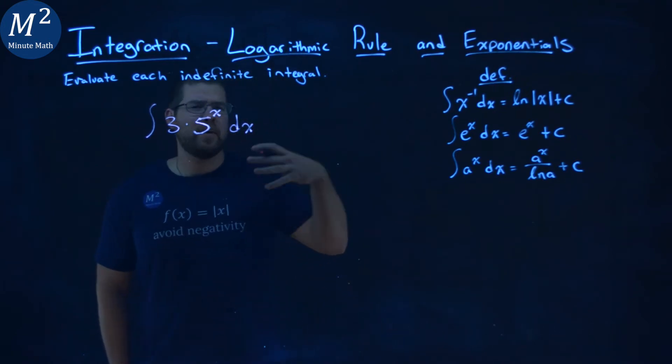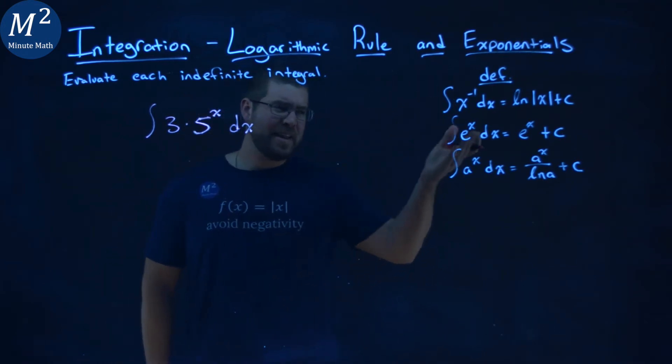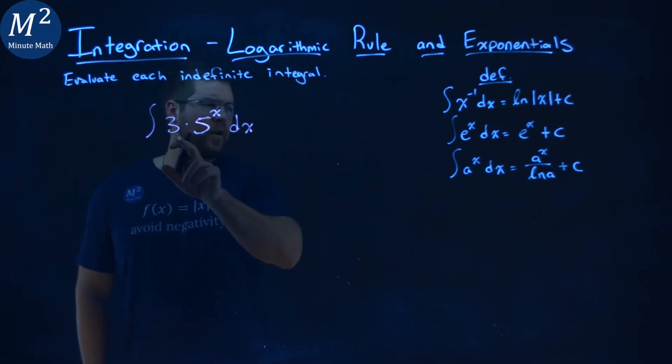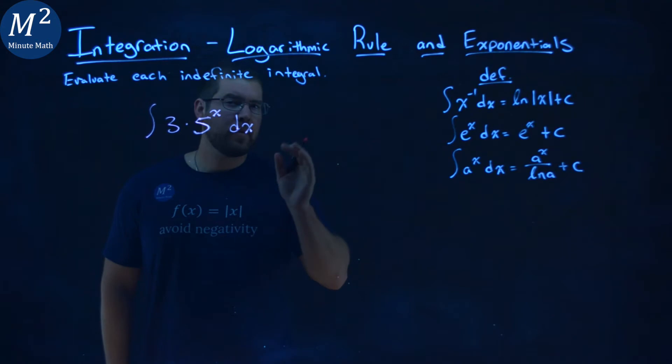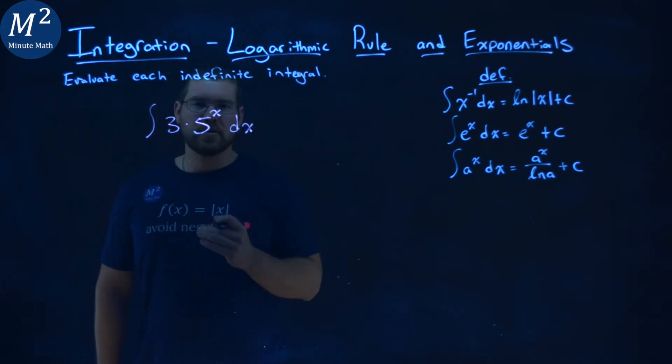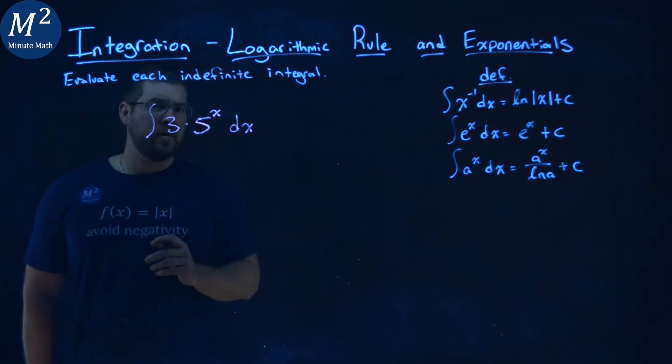Now, I want to see if I can make it look like one of my definitions, and the last definition looks pretty close. I have a 3 though out front that doesn't line up with the definition, but I'm allowed to pull that constant, that 3, outside of the integral because we have multiplication going on here.